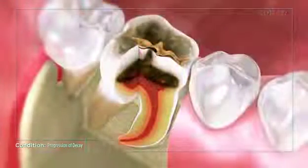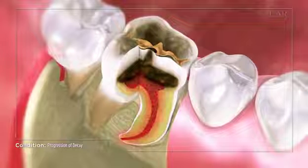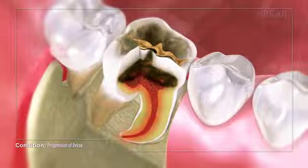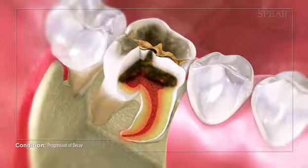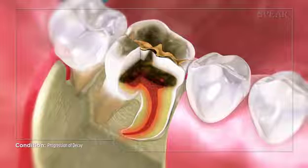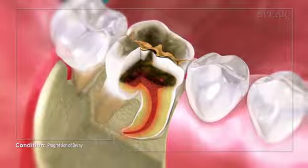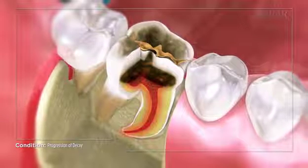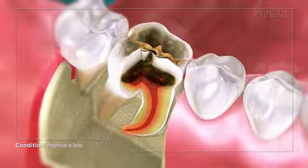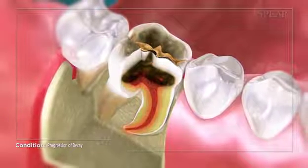A range of external damage can result from this decay as well, such as cracking or fractures in the tooth potentially progressing beneath the gum line and along the root structure. This could ultimately result in the loss of the tooth.